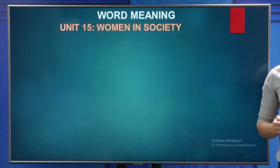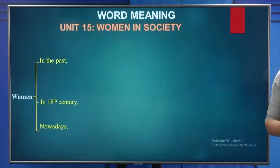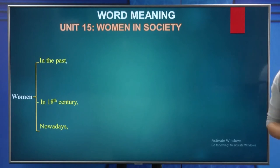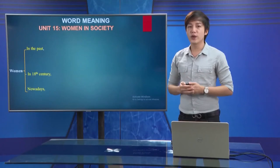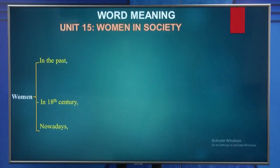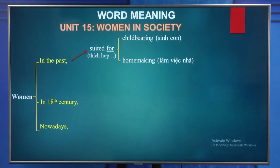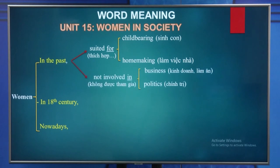Now let's move to Unit 15 - Women in Society. In this unit, we will focus on three periods of time: in the past, in the 18th century, and nowadays. Women in the past were thought to be suited for childbearing and homemaking, and they were not allowed to involve in business and politics.